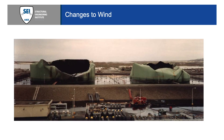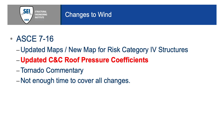Some changes to wind — again, this is thanks to Hurricane Hugo and St. Croix. We have new maps, especially one for risk category four that is now separate. It used to always be risk categories three and four together. We also have new components and cladding roof pressure coefficients, which turned out to be very controversial.